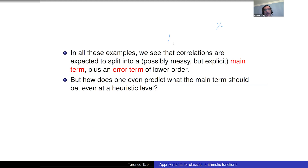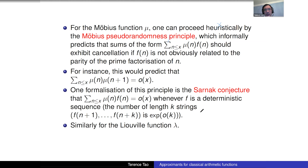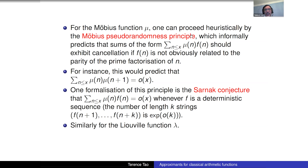Heuristically, for the Möbius function there is a straightforward prediction: the main term should always be zero — at least in any correlation which is not obviously non-zero. This is the Möbius pseudorandomness principle: if you correlate μ(n) with any function f(n) that has no obvious relationship to μ, there should be cancellation and the sum should be smaller than the trivial bound.